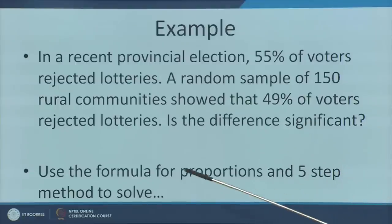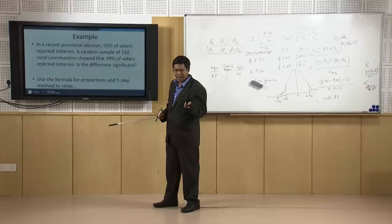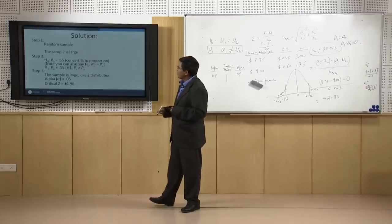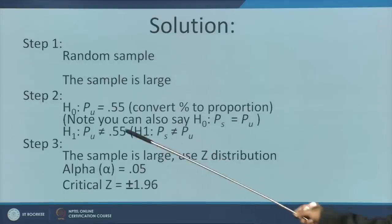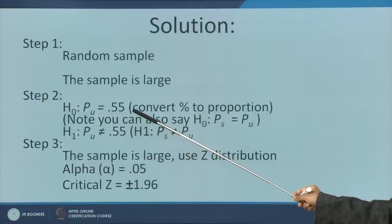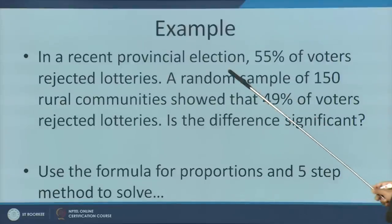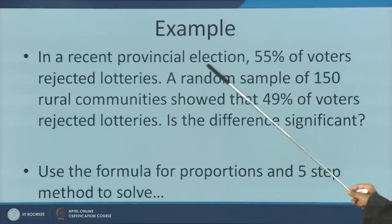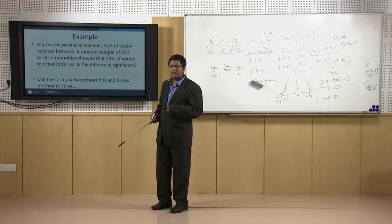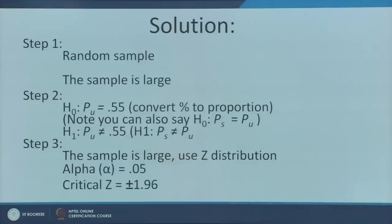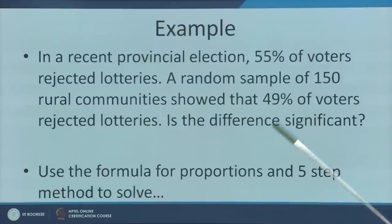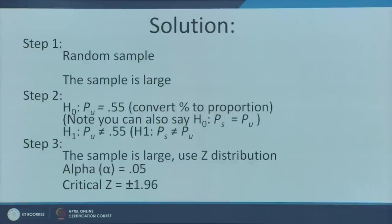Use the formula for proportions following the same steps: write the null hypothesis, decide the significance level, decide the tail of the test. The sample is large at 150. P_u is equal to 0.55 — that is, 55% of voters rejected lotteries. H1 says P_u is not equal to 0.55, because the sample showed only 49% rejected lotteries.